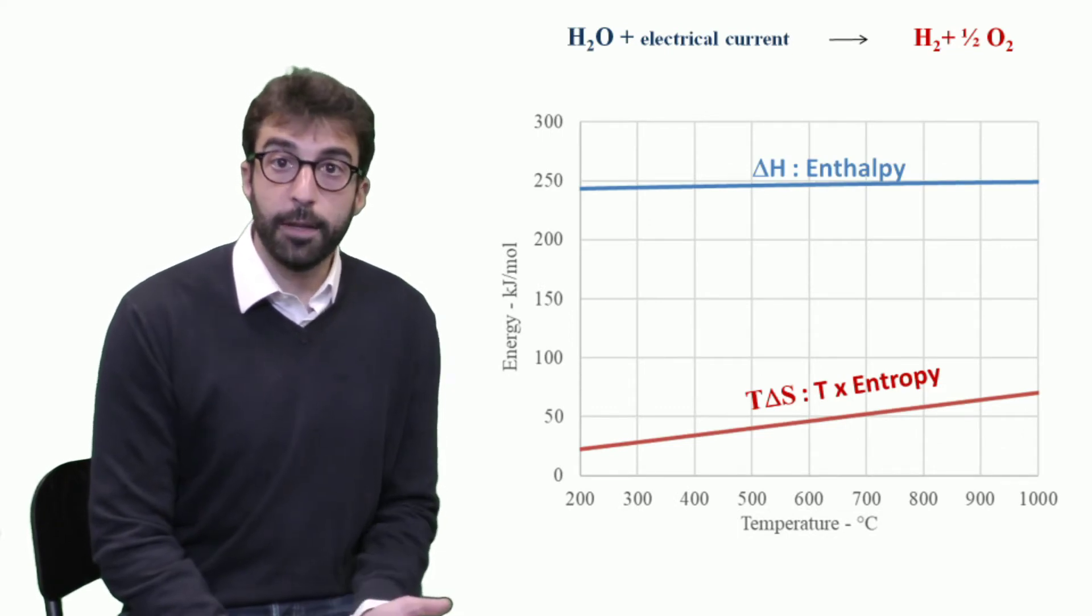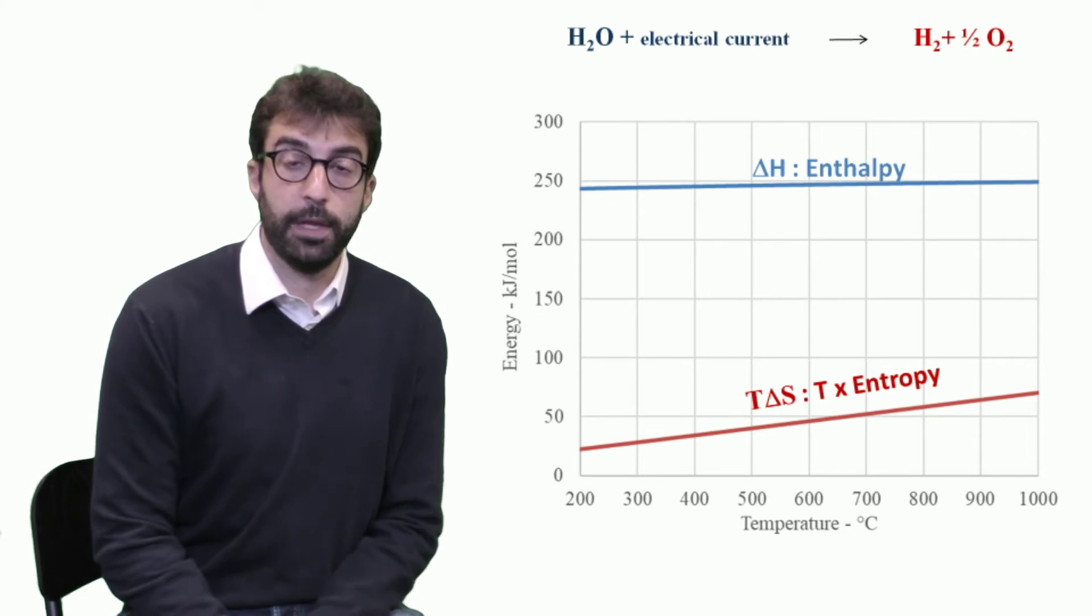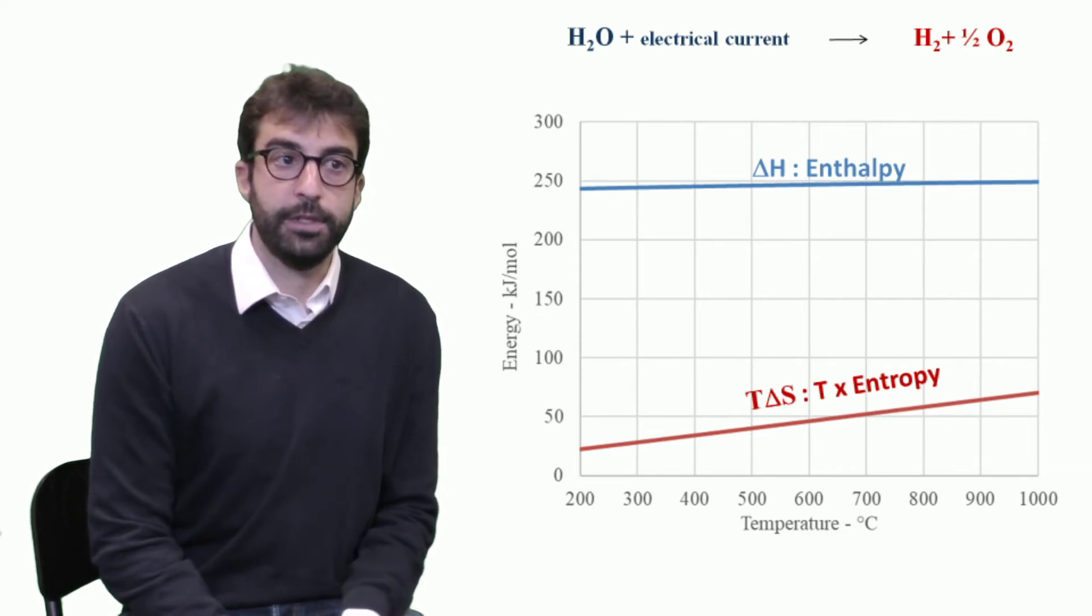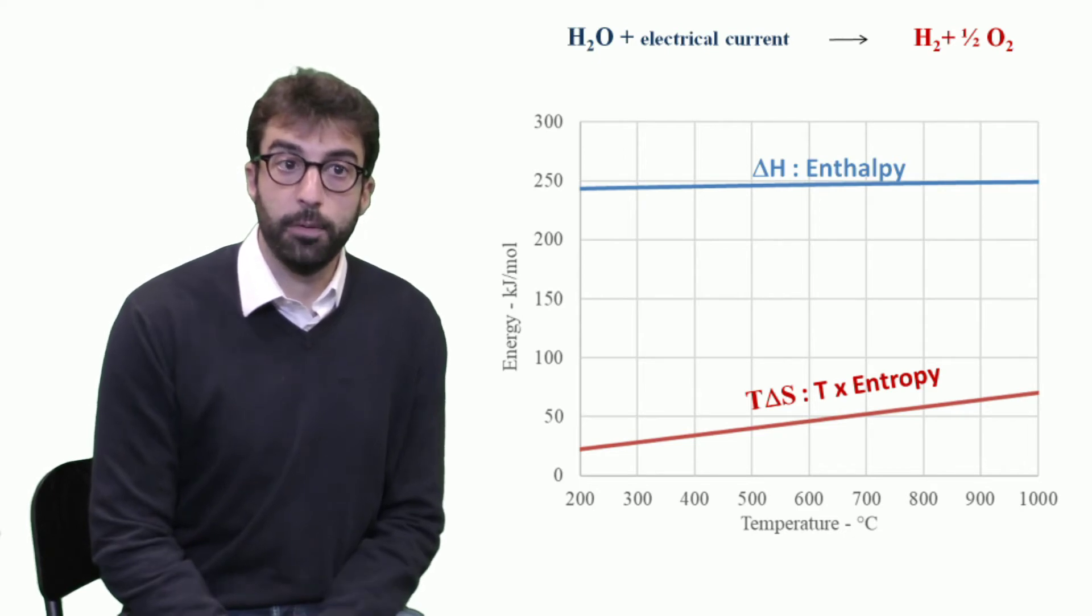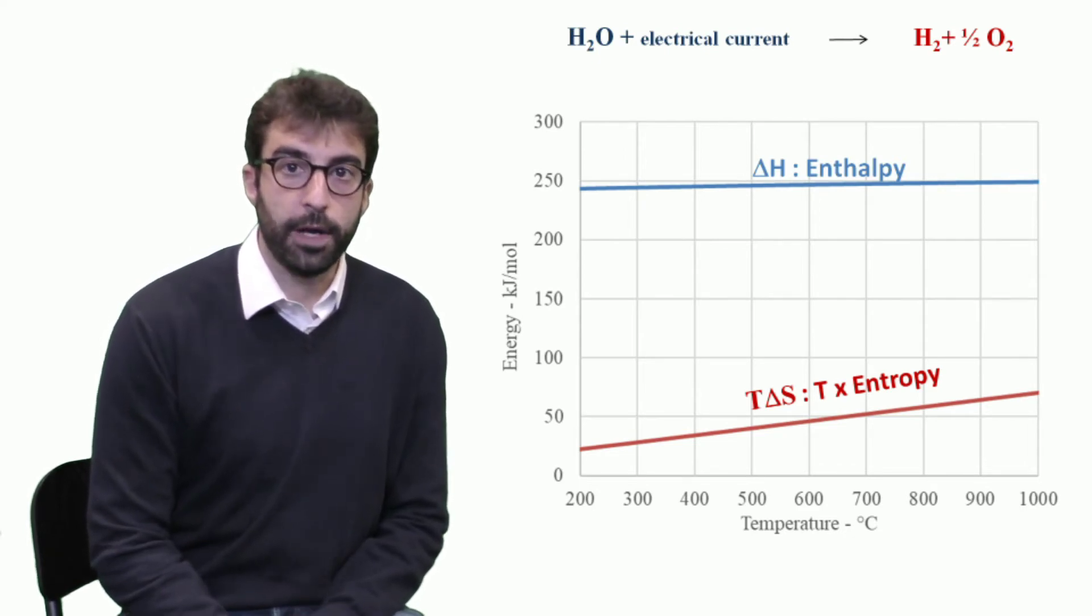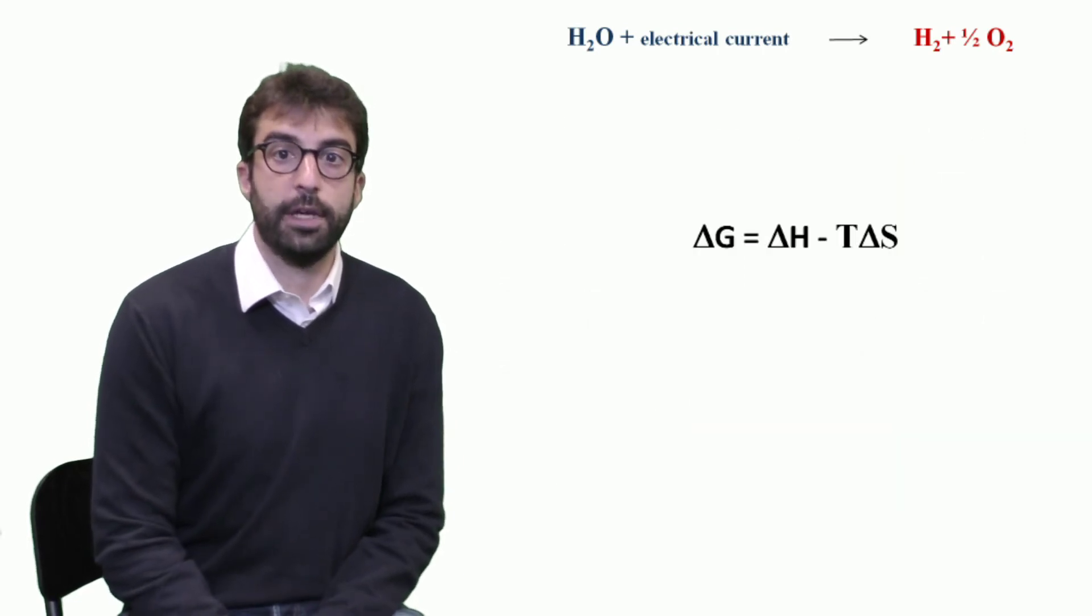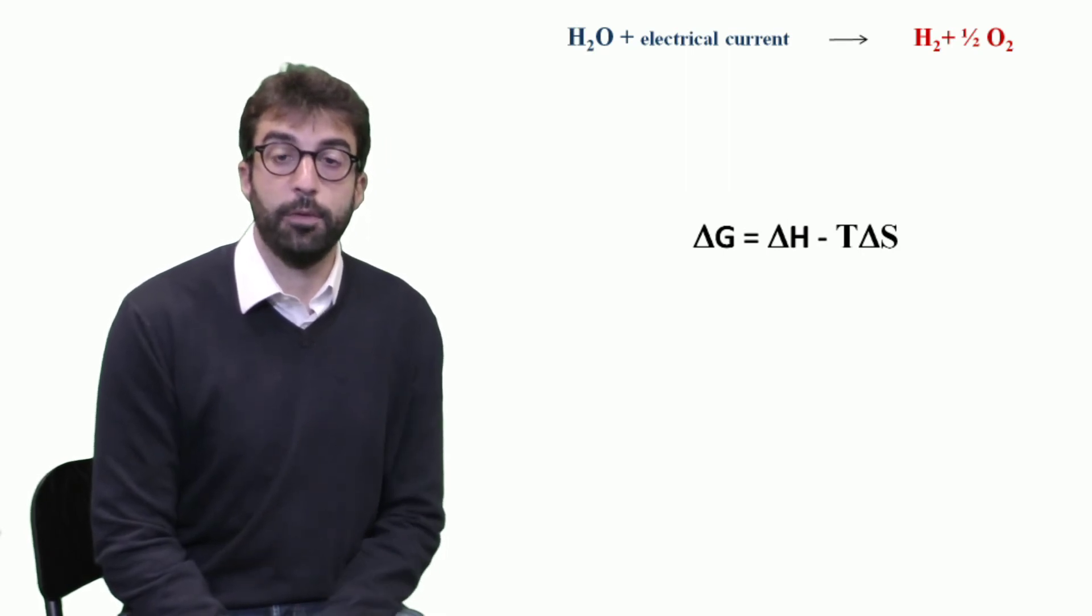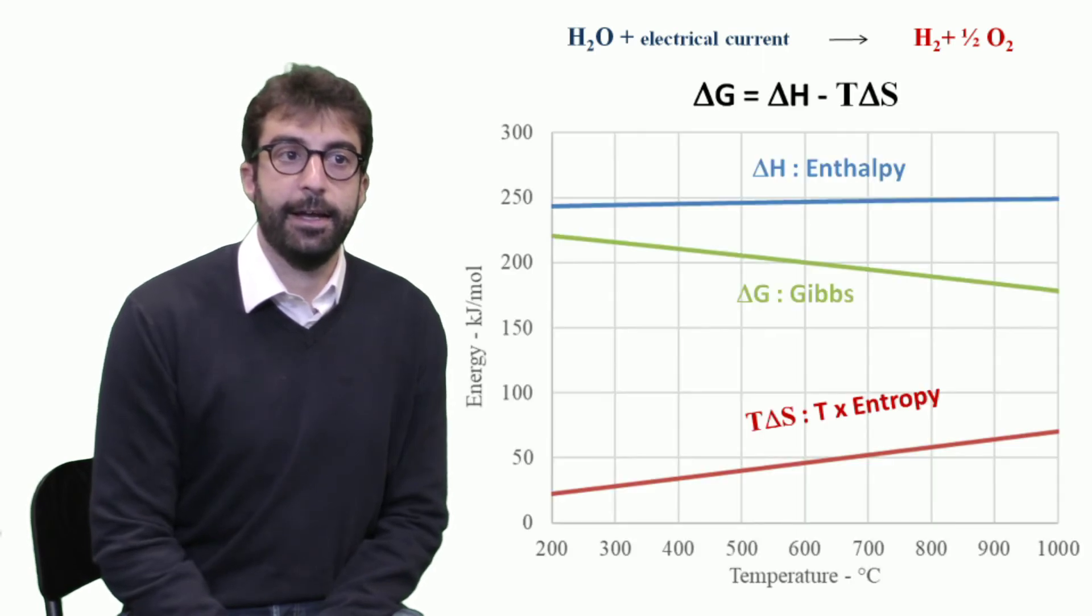Then we see that if entropy increases, then entropy multiplied by temperature increases with a higher slope with increase of temperature. So what is the final result? If we try to go into Gibbs reaction, that is defined as the difference between the enthalpy difference and the difference of entropy multiplied by temperature, what we have is a decreasing amount of Gibbs energy.